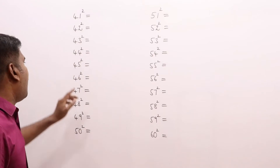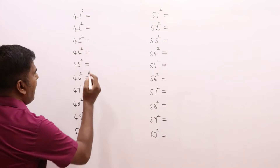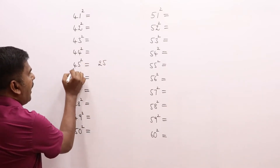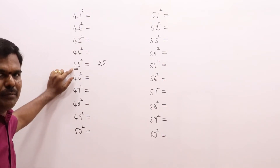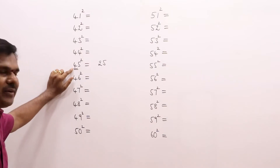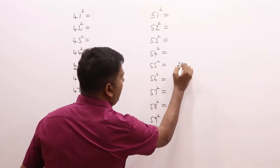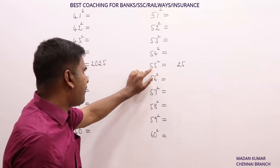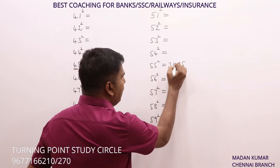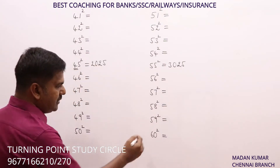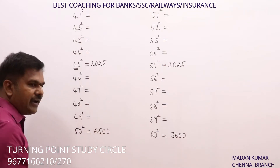We already know 45 square. For numbers ending with 5, the last two digits are always 25, and the other digit is multiplied with the next consecutive number. So 4 × 5 = 20, giving 2025. Similarly, 55 square: 5 × 6 = 30, so 3025. And 60 square is 3600, 50 square is 2500.